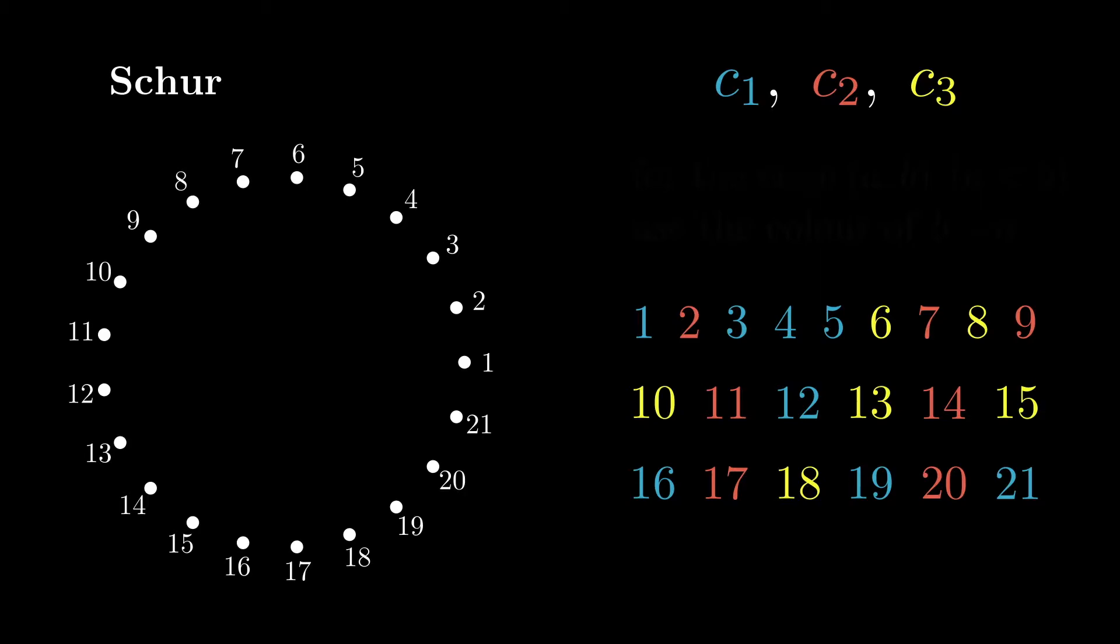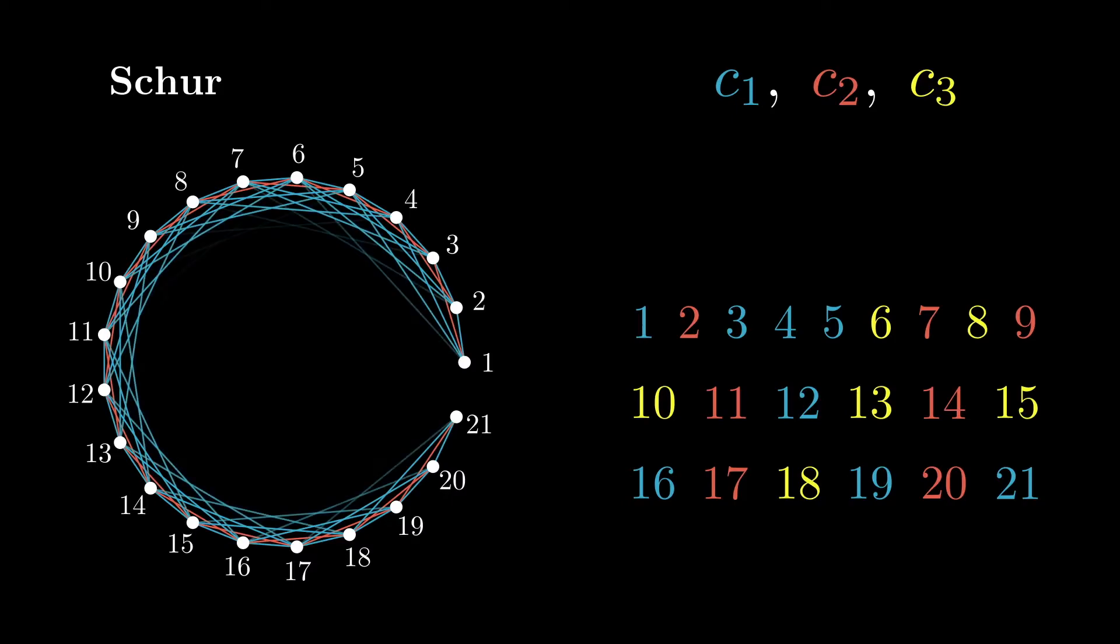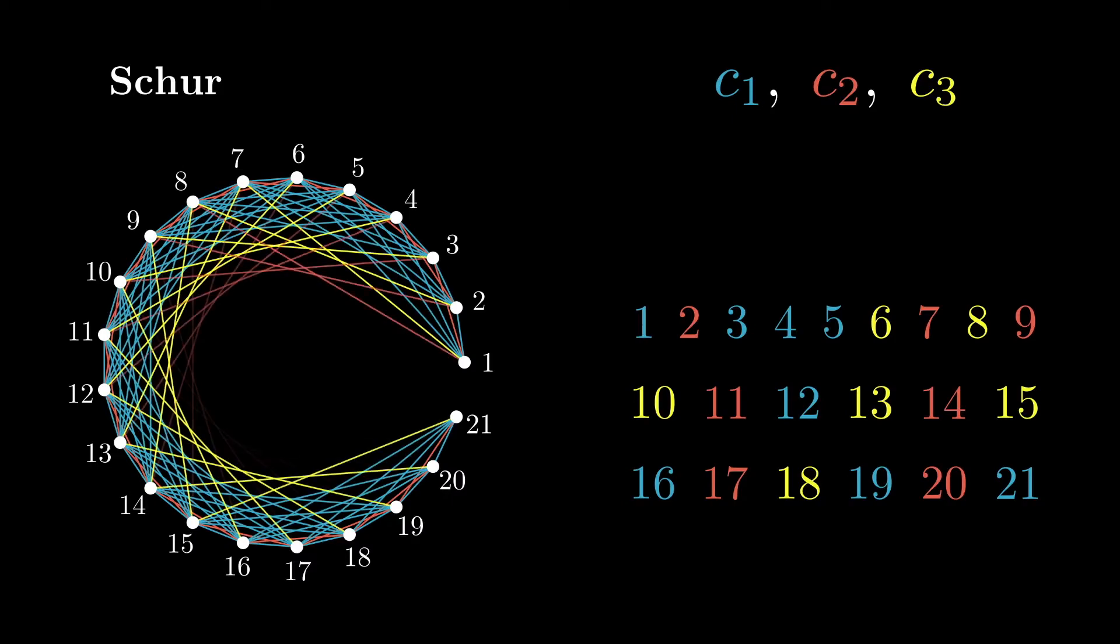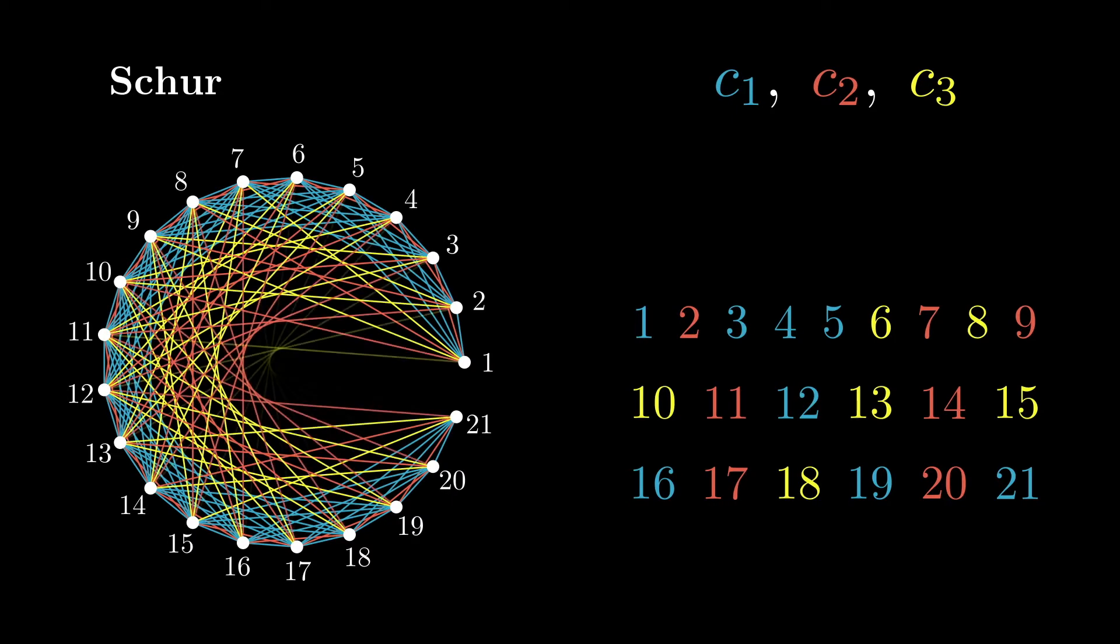First, look at all pairs whose difference is 1, and use blue edges for all of them. Next, look at all pairs whose difference is 2, and use red edges for all of those. And then blue edges for 3, and so on. This process eventually creates a colouring of the complete graph.